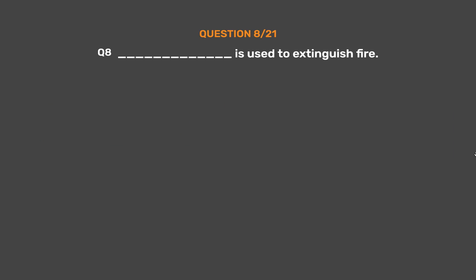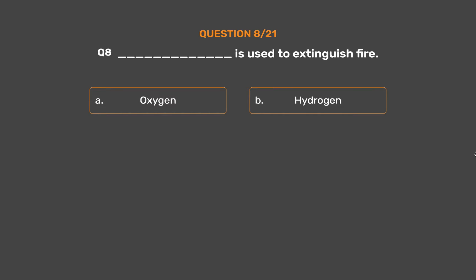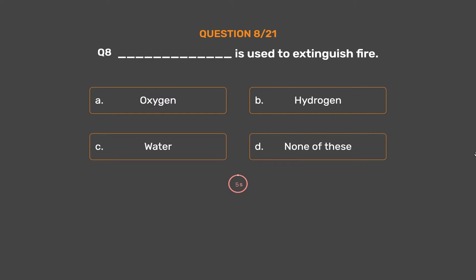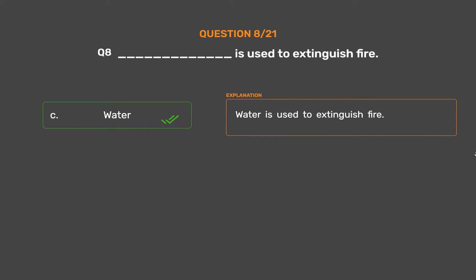Question number 8: _____ is used to extinguish fire. Option A: Oxygen. Option B: Hydrogen. Option C: Water. Option D: None of these. The correct answer is Option C: Water. Water is used to extinguish fire.